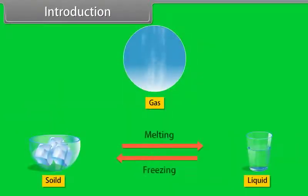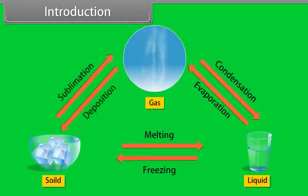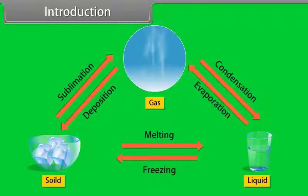Equilibria are solid and liquid, liquid and gas, solid and gas. In homogeneous equilibria, the reactants and the products are in the same phase, whereas in heterogeneous equilibria, the reactants and the products are in a different phase.